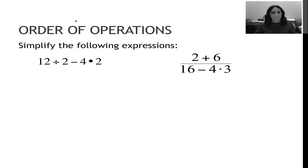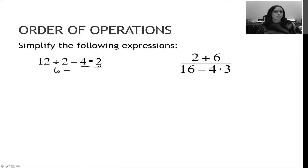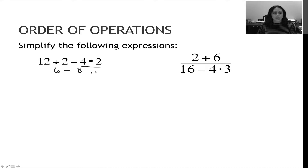Let's do a couple of practice problems. In this question there are no parentheses and no exponents, so I go to multiplication and division from left to right. I see 12 divided by 2, which gives 6. Because it's separated by a subtraction sign, I can also do 4 times 2 on the same step, which is 8. Now I only have subtraction left: 6 minus 8, or keep-flip-change to get 6 plus negative 8. The answer is negative 2.